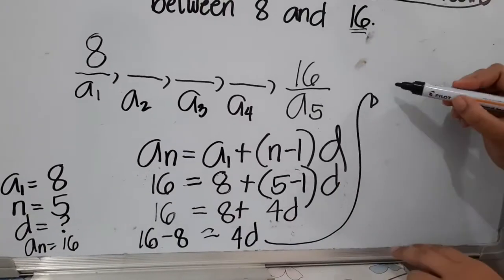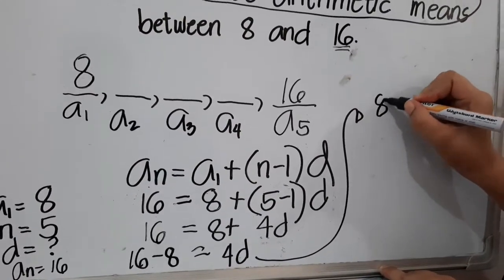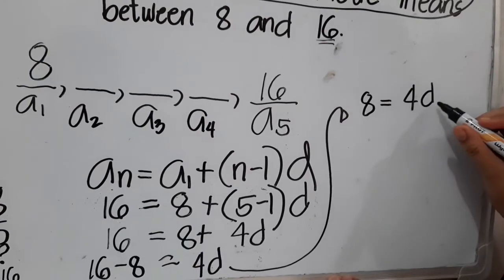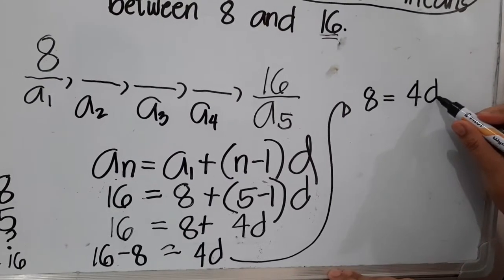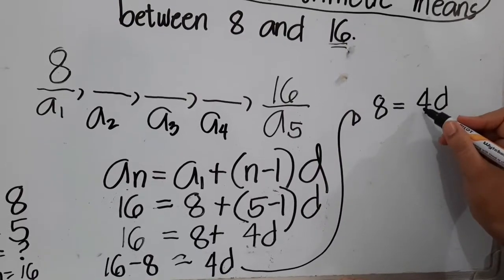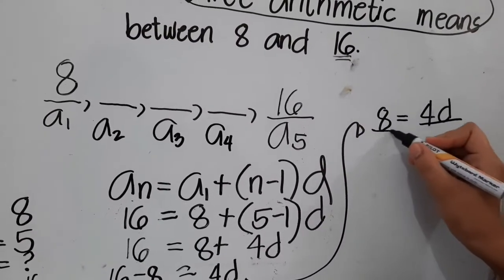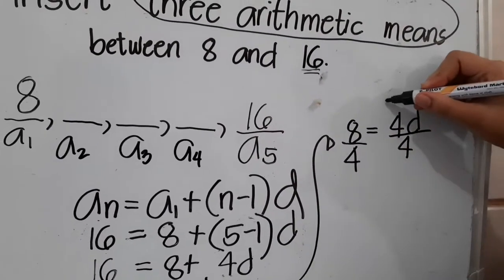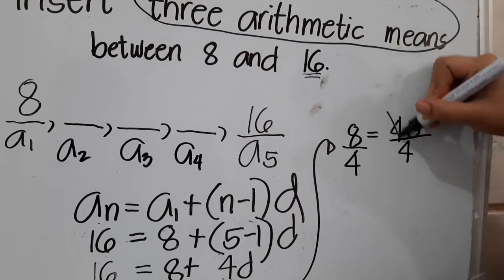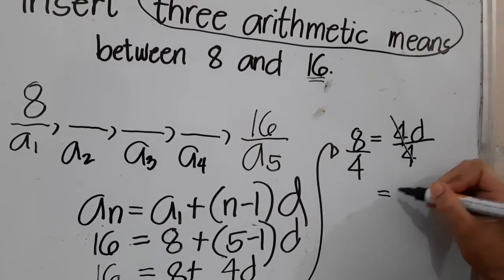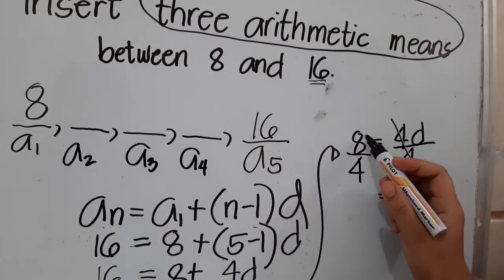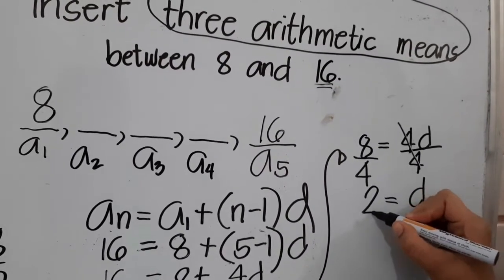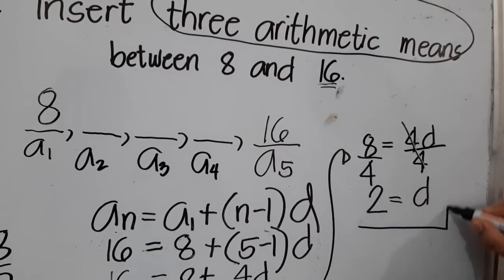Simplifying, 16 minus 8 gives us 8 equals 4d. Solving for d, we apply the division property of equality and divide both sides by 4. So 4d divided by 4 leaves just d, and 8 divided by 4 equals 2. The common difference is 2.